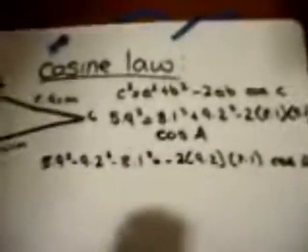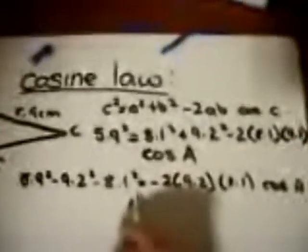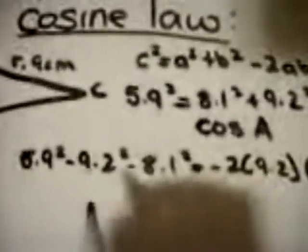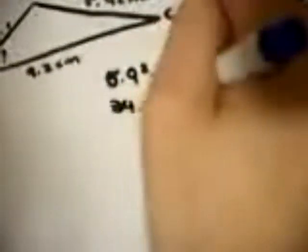Now that we've moved our numbers to one side, we can solve them and then simplify. So we have 34.81 minus 84.64 minus 65.61, which equals minus 149.04 cosine A.